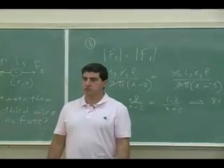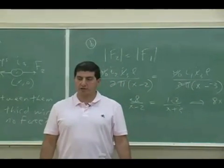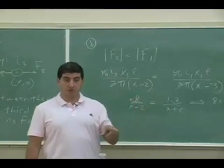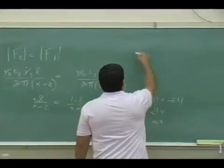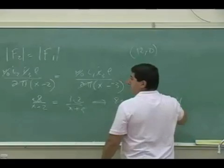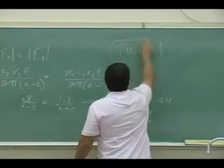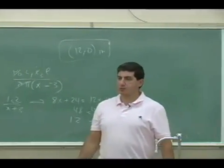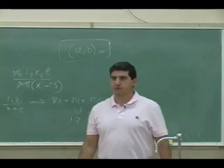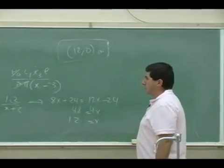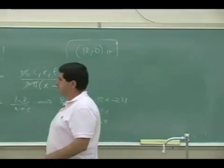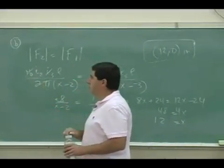That's it. So if you put a wire at the point 12, 0, it's going to experience no force. So it's got to be closer to the weaker current.